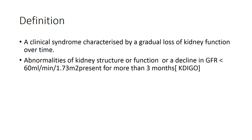We've always defined chronic kidney disease as a clinical syndrome whereby a patient gradually loses their kidney function. The problem with that definition is that it's nonspecific. So we'll go with the kidney disease improving global outcomes definition, which tells us that when a patient has abnormalities of kidney structure or kidney function, or a decline in the glomerular filtration rate less than 60 for more than three months, that would be considered chronic kidney disease.